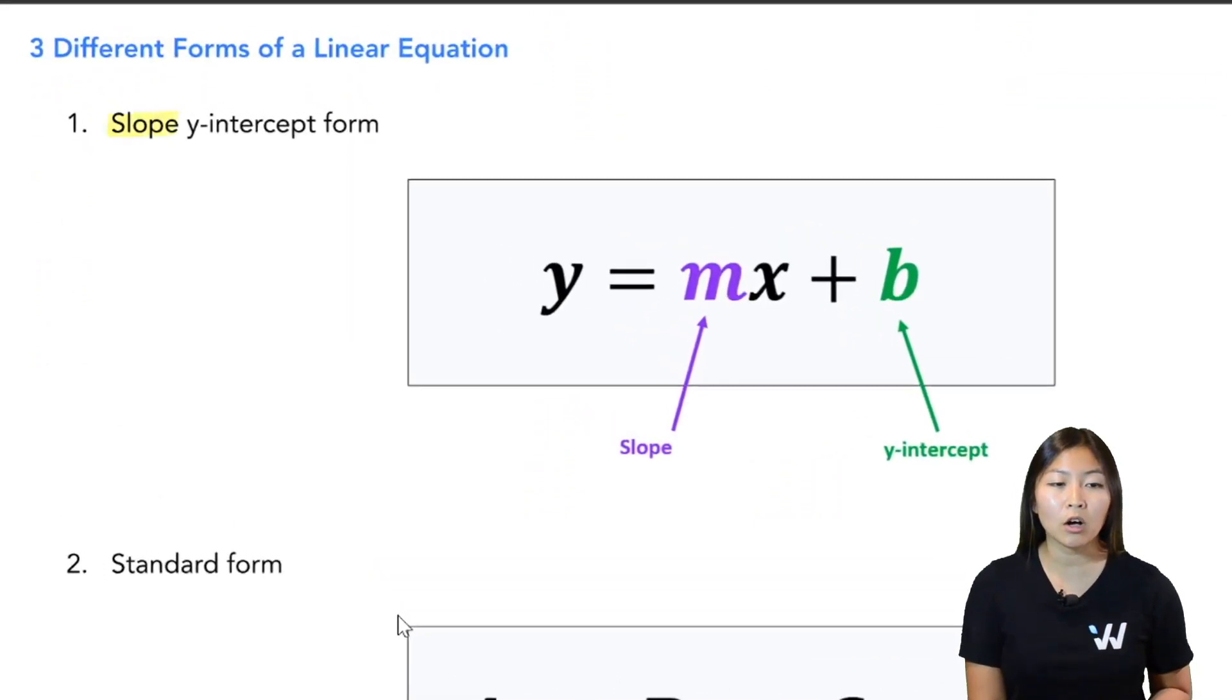The first one is called the slope y-intercept form. And as the name suggests, this equation gives us the quickest way to find out what our slope and what our y-intercepts are. So this equation looks like this: y equals mx plus b. Some teachers might have called it y equals ax plus b. So these mean the exact same thing.